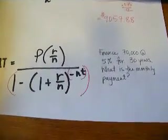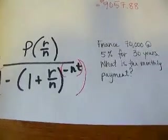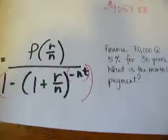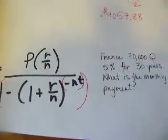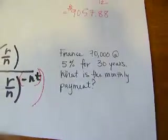Alright, also remember that the P is the amount you finance, not the total purchase price of the house. Sometimes it will give you a total purchase price with a down payment. So make sure that that P is the amount you're financing. Alright, so let's work through a problem.